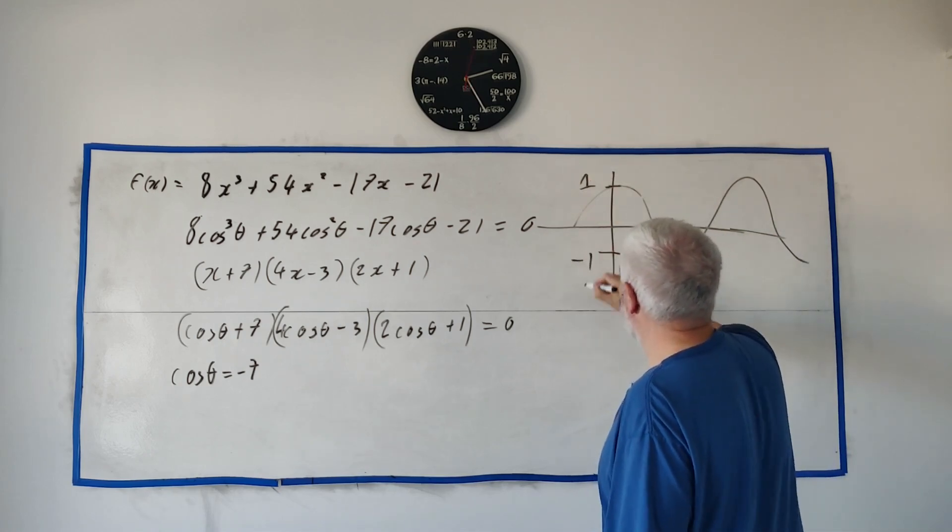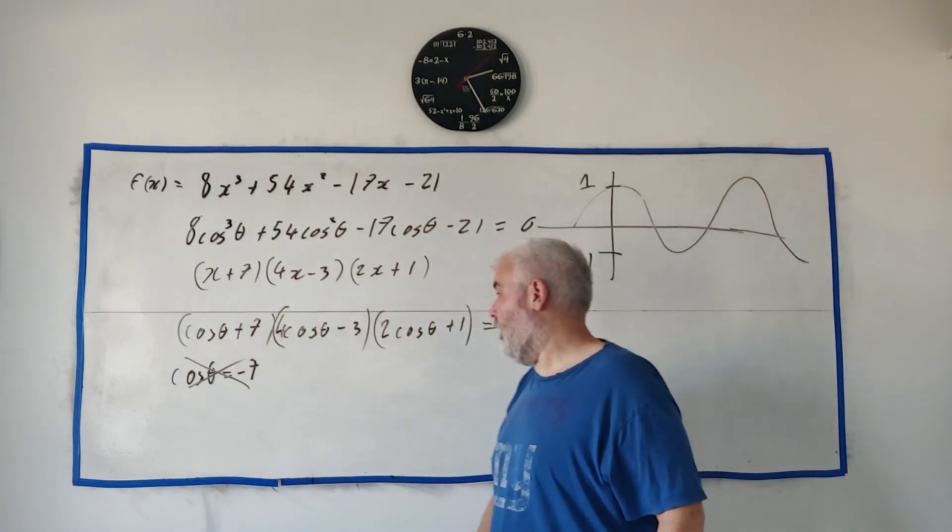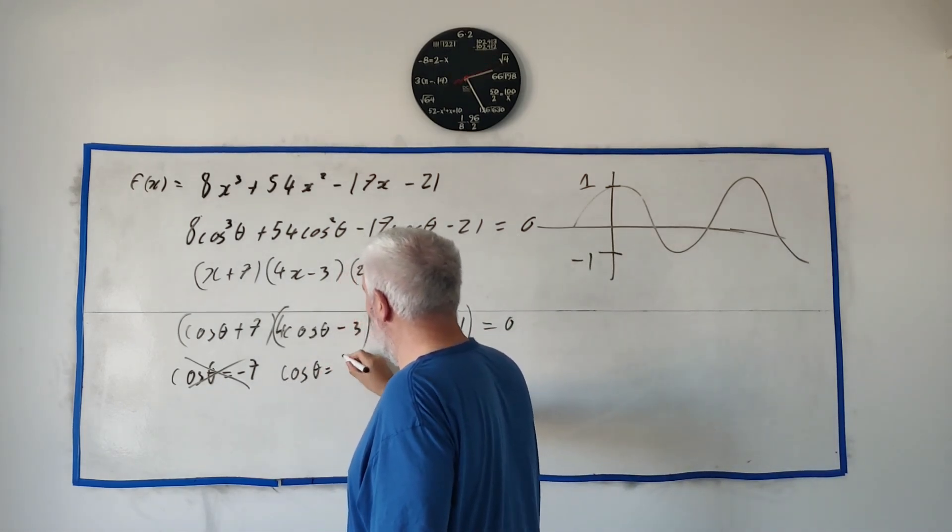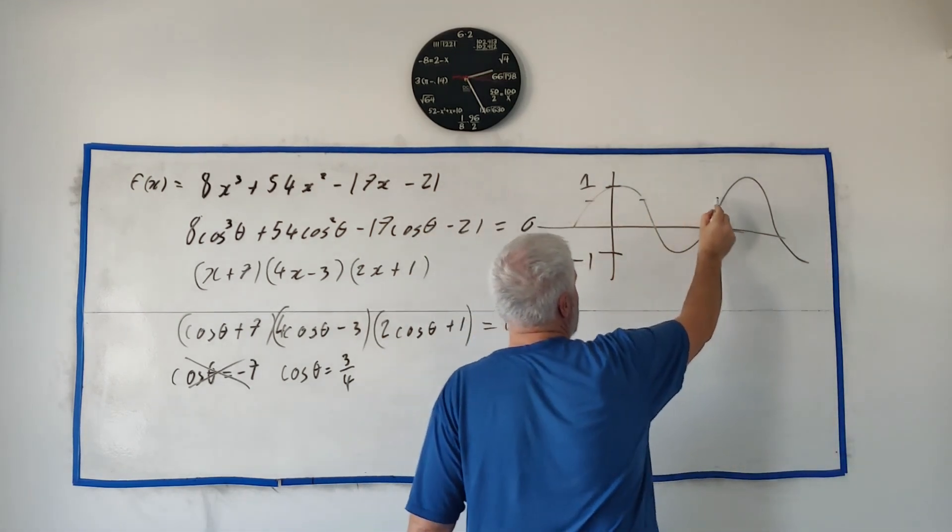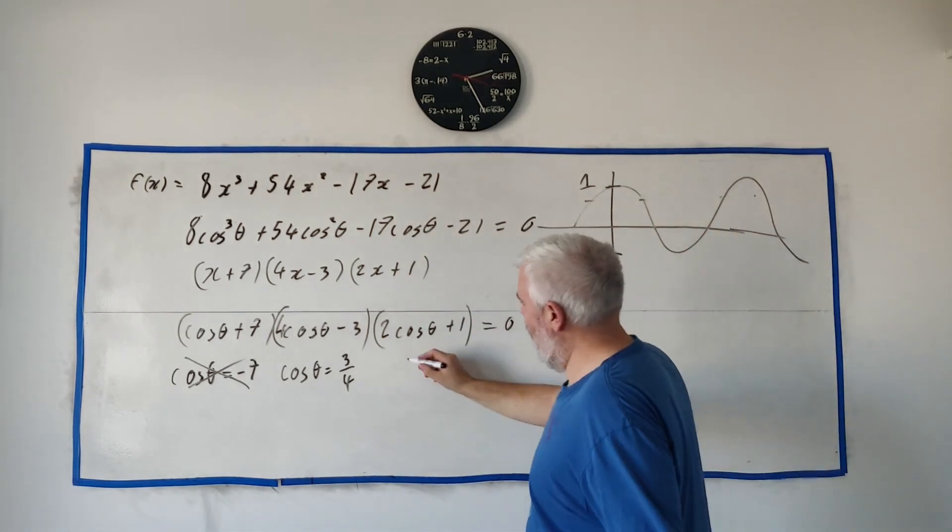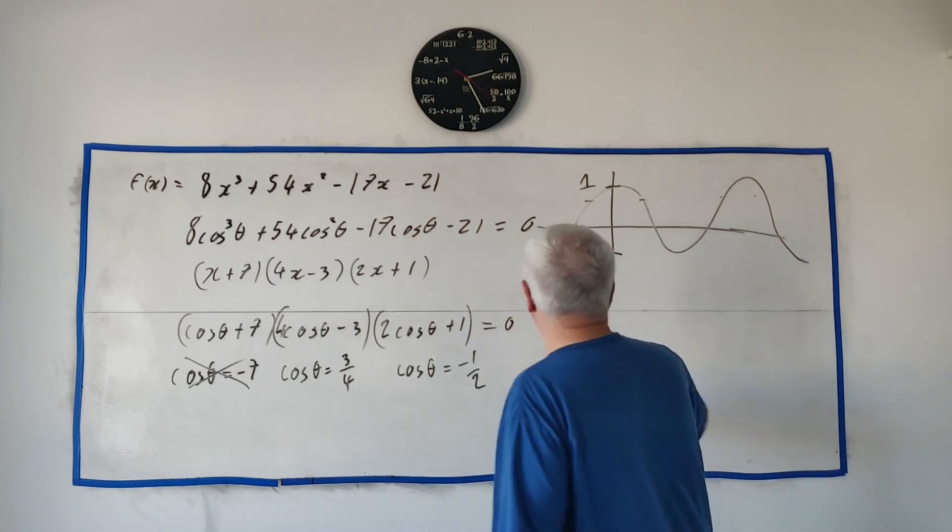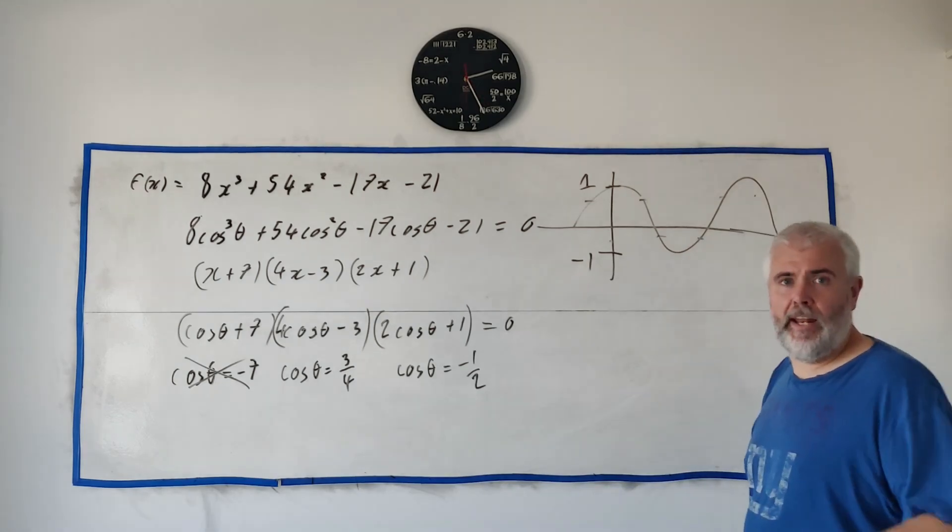Is it this guy? Is cosine theta equal minus seven? Is that a possibility? Something wrong with that. Here's cosine, something like that. Cosine only goes as high as one and as low as minus one so it can never actually equal seven. This cannot be correct that's not a correct one.